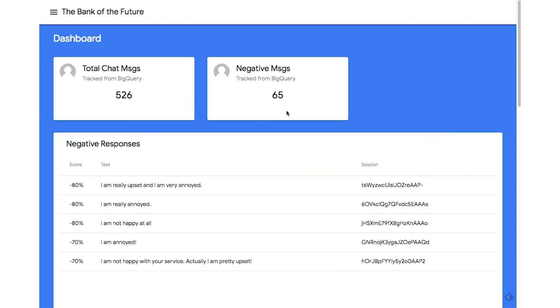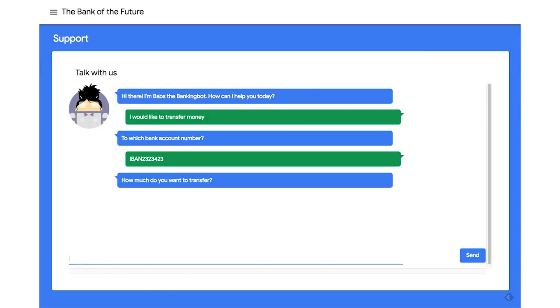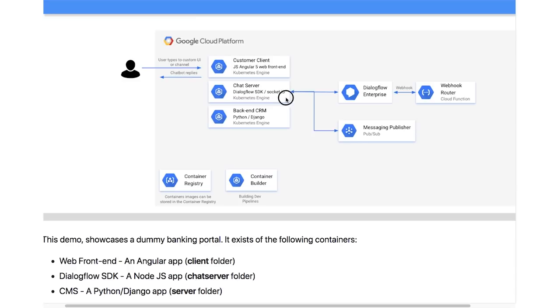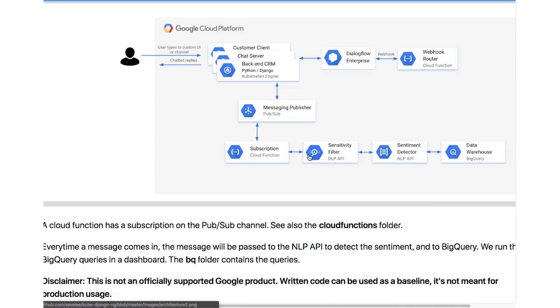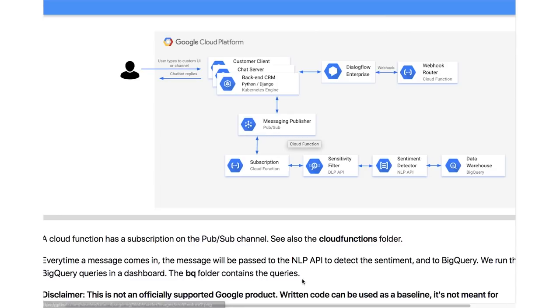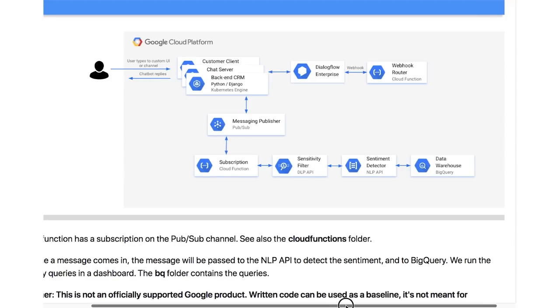Lee is doing a demo in the Demo Derby later. Lee, could you give us a quick synopsis? I'm building a customer care application using Dialogflow and other Google Cloud components to create a real chatbot experience. I'm using Kubernetes — a front-end container and a back-end container that talks to Dialogflow through the SDK. Every time customers type something in the chatbot, we pass it to PubSub. A Cloud Function captures the message, goes into the DLP API to remove sensitive information, then to the NLP API to detect sentiment so you can figure out if people are happy or not. Then we pass it into BigQuery as a data warehouse and push it into a dashboard to optimize the chatbot.